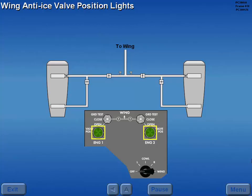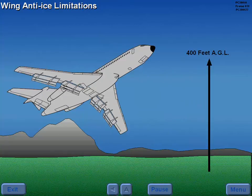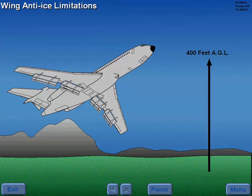The wing anti-ice valve position lights function as switch valve agreement lights. Wing anti-ice should not be selected after takeoff until climbing through 400 feet AGL.